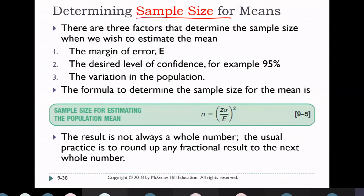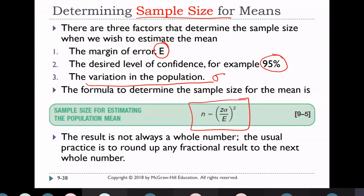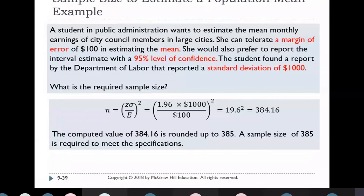How to determine the sample size? There are three factors: the margin of error (E), the desired level of confidence, and the variability in the population (standard deviation). The formula for sample size is: N = (z · σ / E)². The result is not always a whole number, so round up to the next whole number.